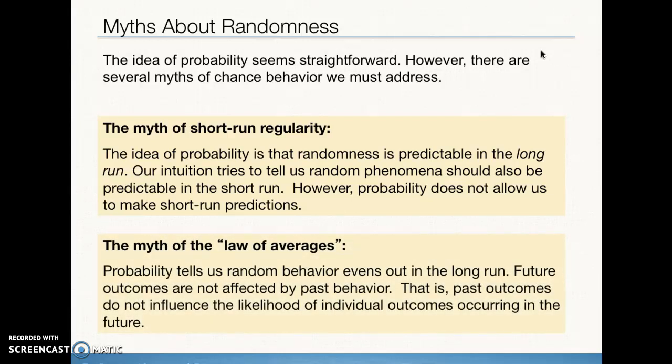The idea of the law of averages is basically when we think that an outcome has happened frequently enough so that we expect the next time a different outcome, so that things will eventually right themselves or even themselves out. This is not something that we should ever use for anything. The law of averages does not exist. We cannot assume that we can predict specific individual outcomes based on previous behavior.